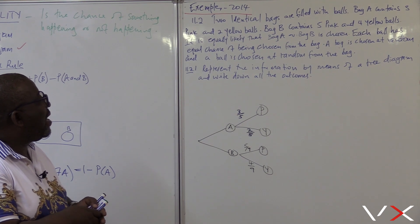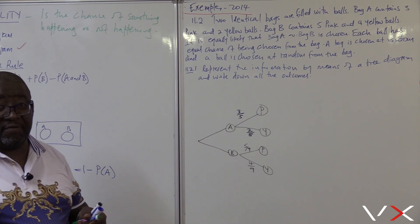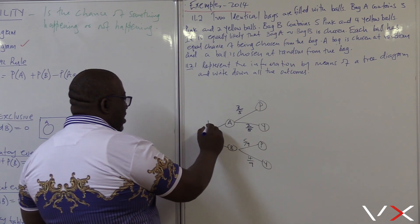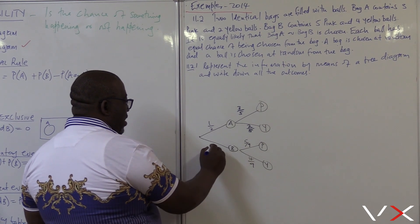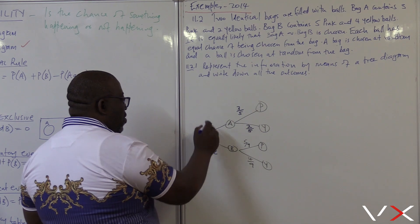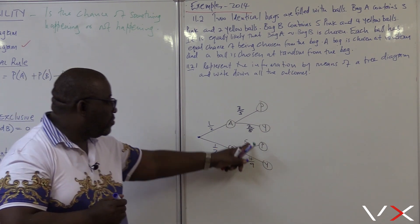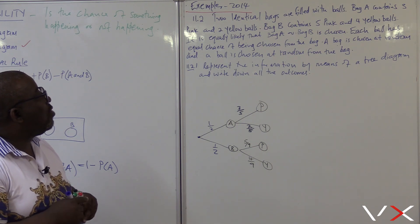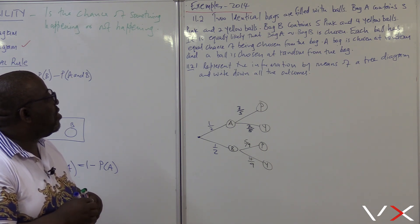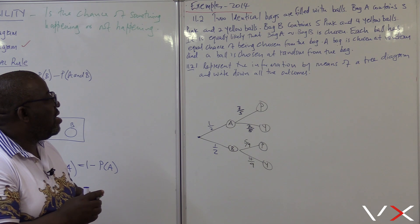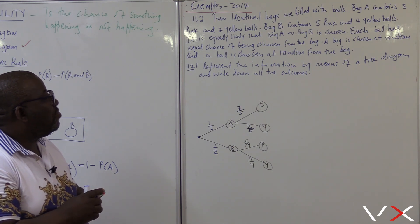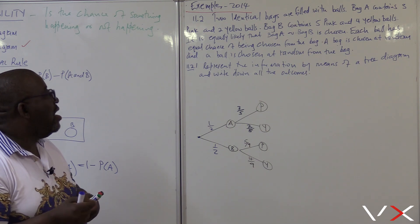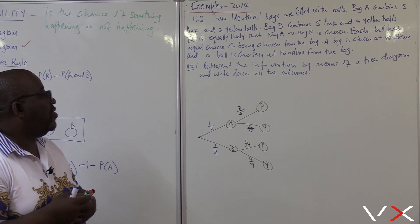It is equally likely that bag A or bag B is chosen — fifty-fifty chance. So it's one half for bag A and one half for bag B, and when you add them you get one. Each ball has an equal chance of being chosen from the bag. A bag is chosen at random, then a ball is chosen at random. Represent this information by means of a tree diagram.